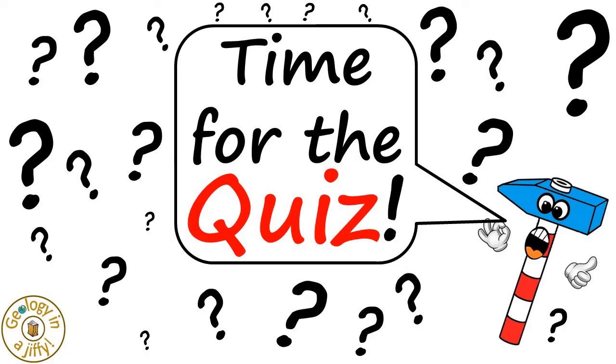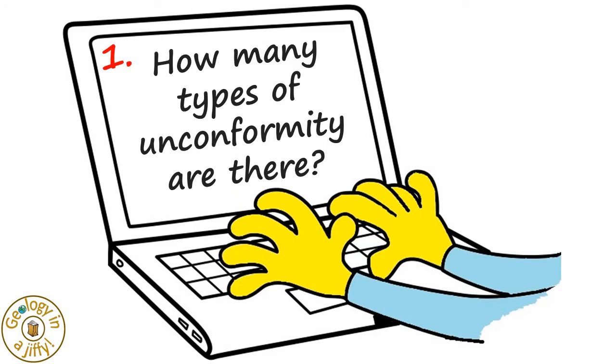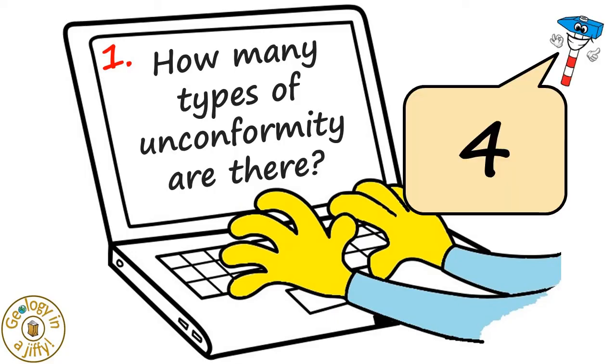It's quick quiz time! How many types of unconformity are there? Four types.